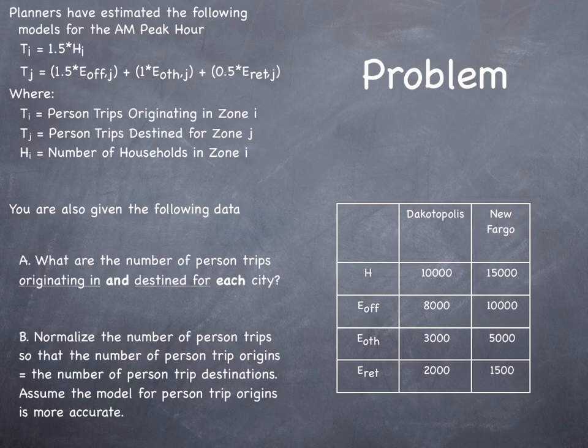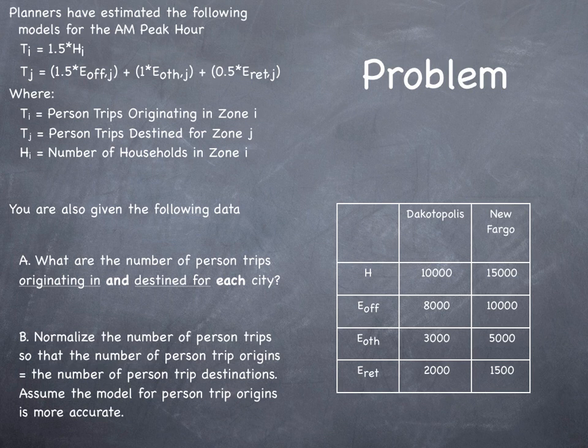So we're going to have a problem here. Planners have estimated the following models for the AM peak hour. Ti, the number of trip origins, equals 1.5 times Hi, the number of households in the origin zone.